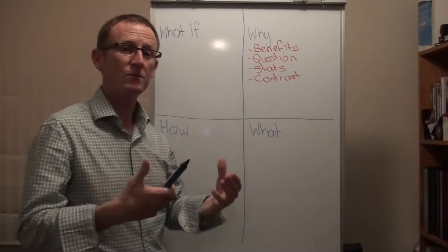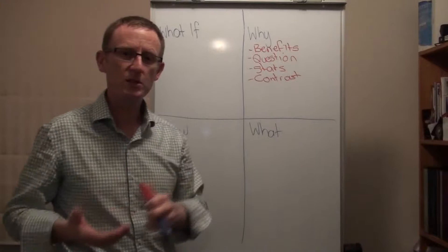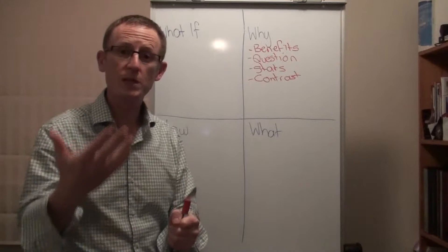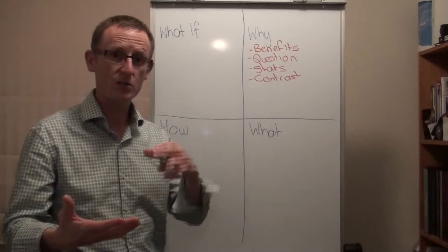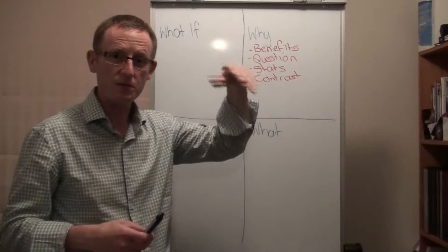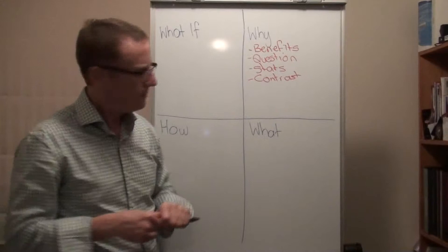That's called a contrast frame. So if we're talking about all the benefits — giving ourselves confidence, our ability to present without notes — we could then say: 'Imagine the opposite of that. Imagine if we didn't have a framework. What would be the impact if you had to sit in front of your audience and read off your notes, couldn't connect with your audience, couldn't inspire or engage them, and continually had to look down and read?' That contrast frame lets them see the benefits and then what would happen without the framework.